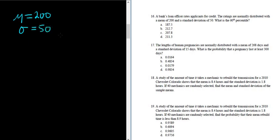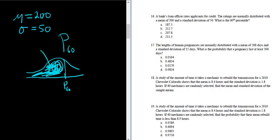And it wants the 60th percentile, so p sub 60. The 60th percentile is the number such that 60% of the area under the curve is to the left. So 60% is going to be over here.